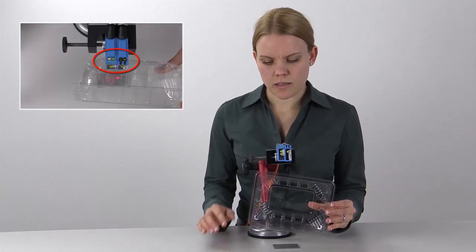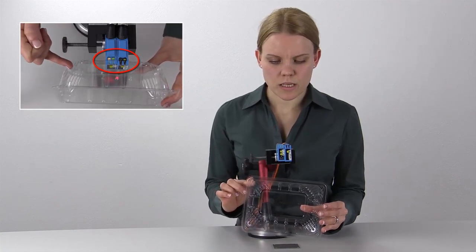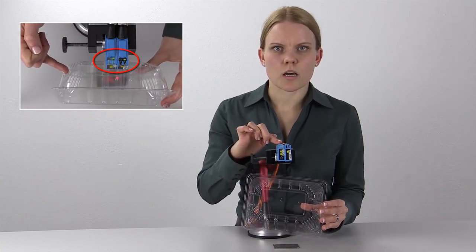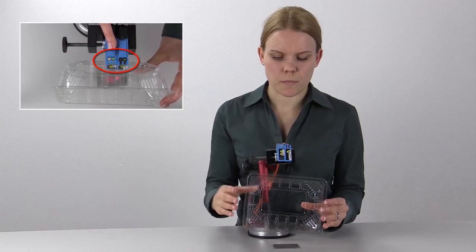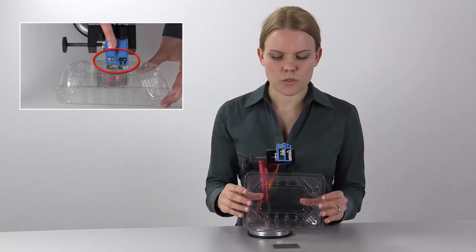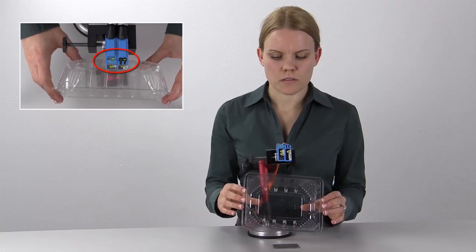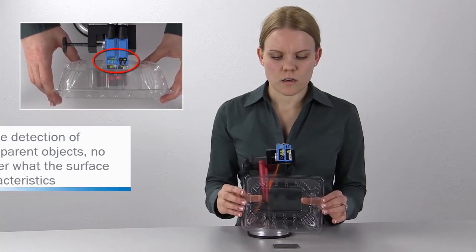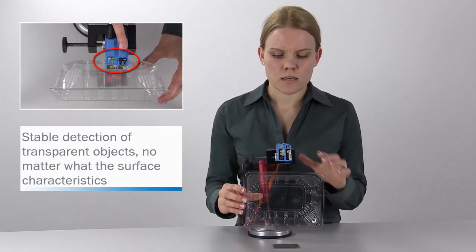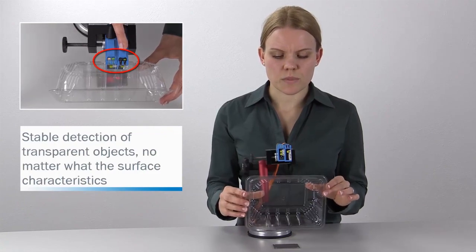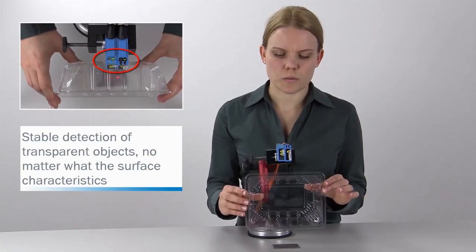Already the irregular leading edge of the transparent tray leads to false switching of the common photo-eye. The same occurs if I move the tray a bit, while the Transpatect stays stable as it is optimized for the detection of transparent trays.